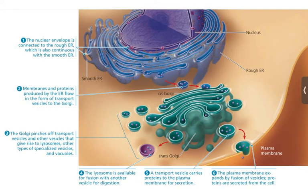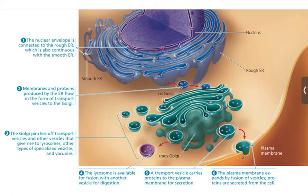All of these organelles — the nucleus, ER, Golgi, lysosomes — make up something called the endomembrane system. It's called this because evolutionarily, a cell enfolded its membrane and created brand new organelles. They're all connected, and we can take things between these organelles through vesicles that transport biomolecules to and from the different organelles.